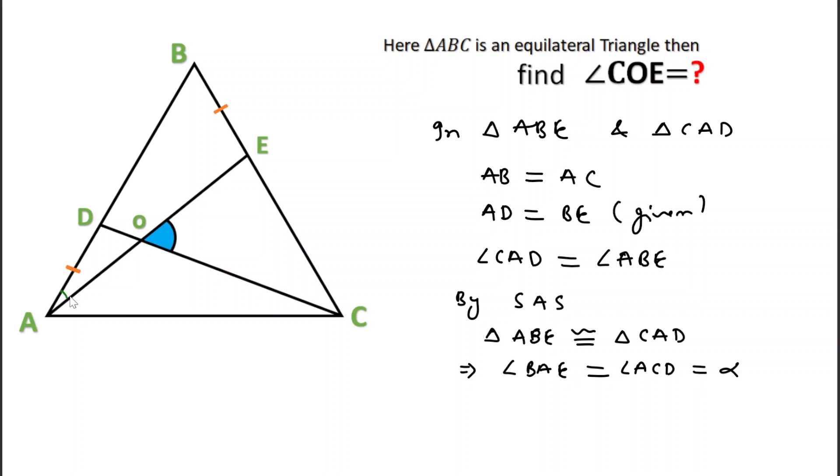Let's suppose this is equal to alpha. If we write here this angle as alpha and this angle as alpha, this angle will also be alpha. Now as we know each angle of equilateral triangle is 60 degrees, so this means this angle will be 60 minus alpha. Then this angle will be...